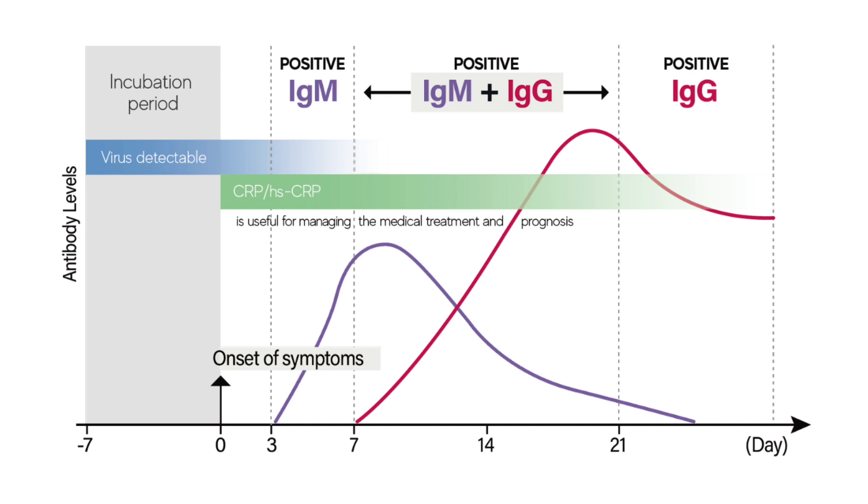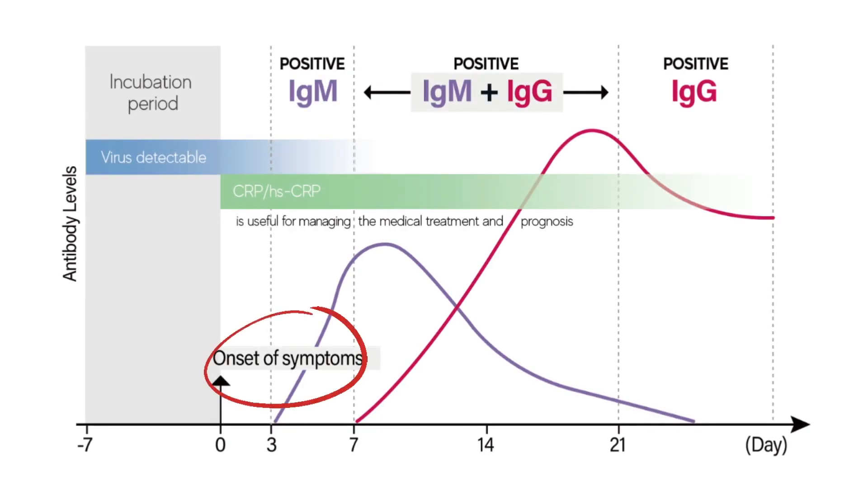All right, so this is a normal immunoglobulin curve. First, if we start at the upper left, there's an incubation period, you get exposed to something and there's a period of time when it's in your body, but it's not really causing symptoms. Now we develop symptoms. And as we develop symptoms, this is when we think we're sick and our body first creates immunoglobulin M.